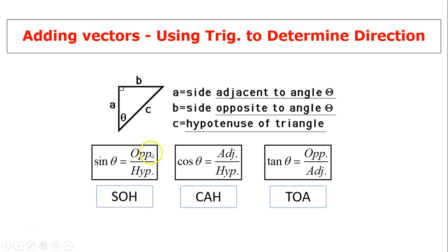We use SOH CAH TOA. Sine theta equals opposite over hypotenuse, B over C. Cosine theta is adjacent over hypotenuse, A over C. Tangent theta is opposite over adjacent, B over A.